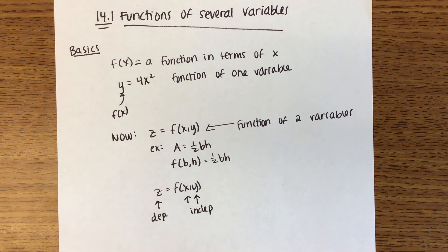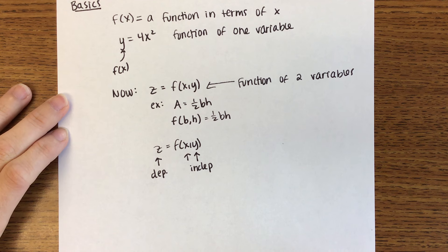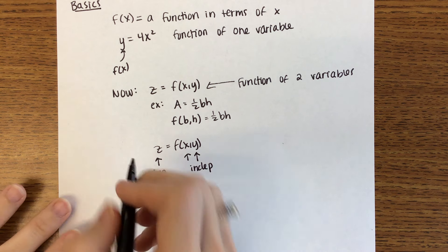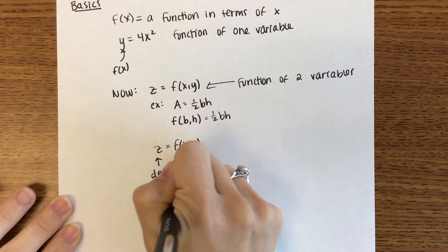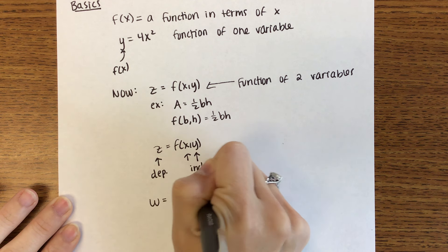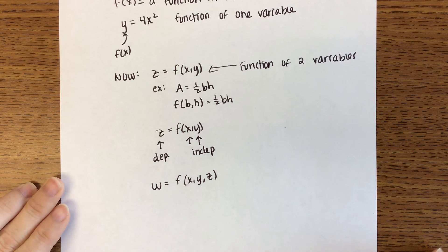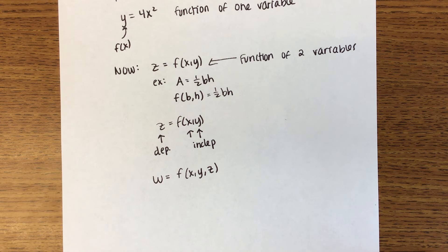You've seen that notation before and definitely heard those terms. We're looking at functions of more than one variable — it could be two, three variables, etc. If you have a function of three variables, maybe you call it w equals f of x, y, z. We are mainly going to focus on functions of two and three variables.